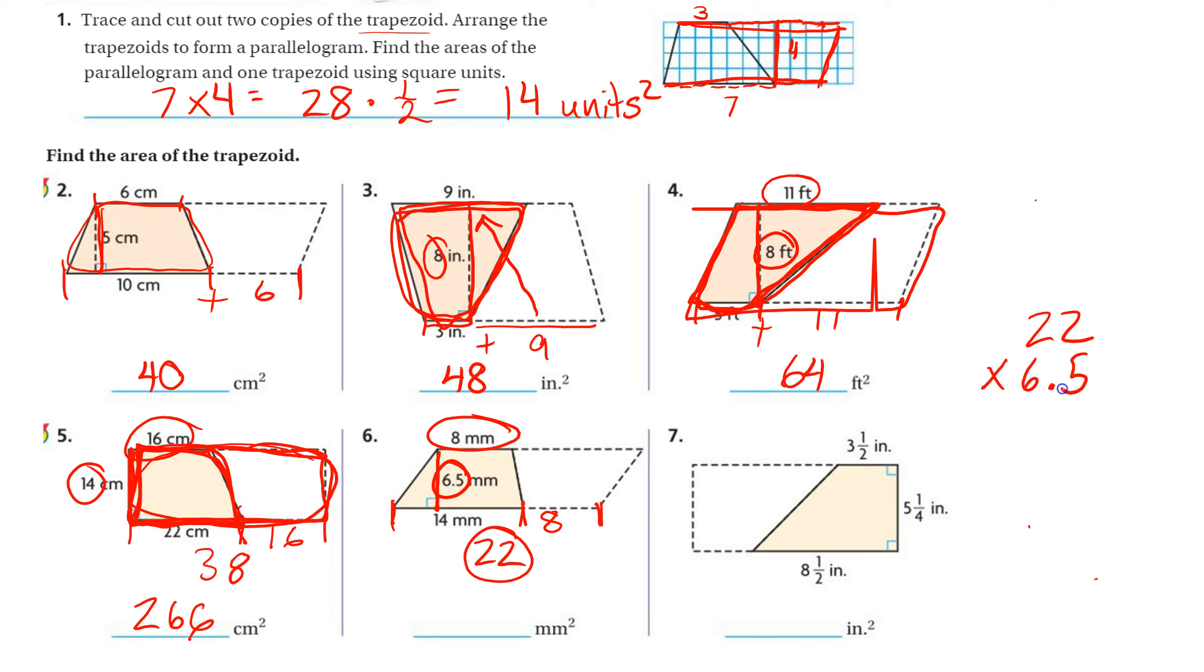And then I do 22 times 6.5, which we practiced yesterday. So I have no numbers behind the decimal here, I have one number behind the decimal here. So when I get my answer, I'm going to move my decimal over 1. 5 times 2 is 10, 5 times 2 is 10, 5 times 2 is 10 plus the 1 is 11. Kiss that 5 goodbye, hug it out, no hard feelings. 6 times 2 is 10, 6 times 2 is 10 plus the 1 is 11. Add that all up.